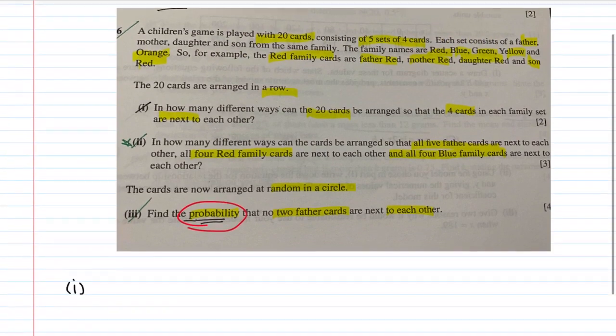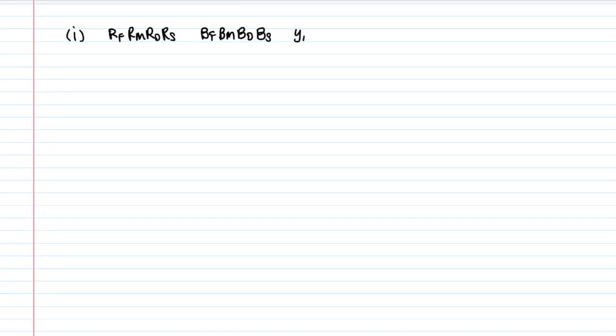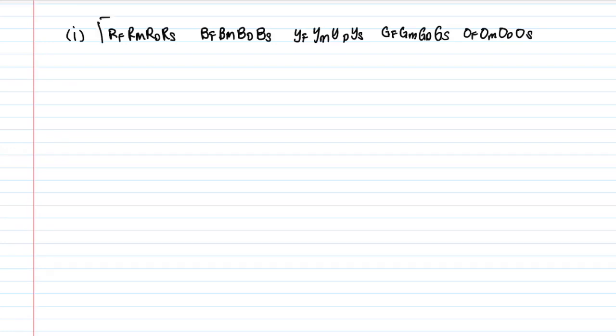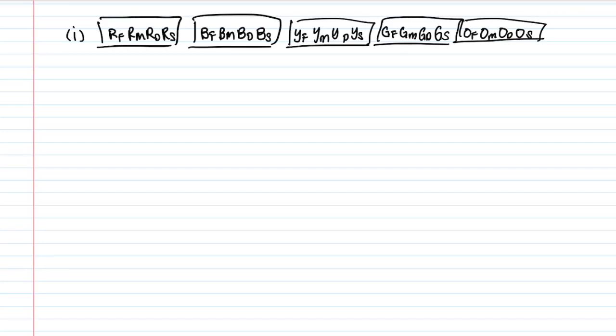Question six, part one. I'll draw the five different sets. I've got red, blue, green, yellow, and orange families each in a row: red father, red mother, red daughter, red son; blue father, blue mother, blue daughter, blue son; yellow father, yellow mother, yellow daughter, yellow son; green father, green mother, green daughter, green son; and orange father, orange mother, orange daughter, orange son. Think of each family as a whole set in their own box — they have to be arranged next to each other.